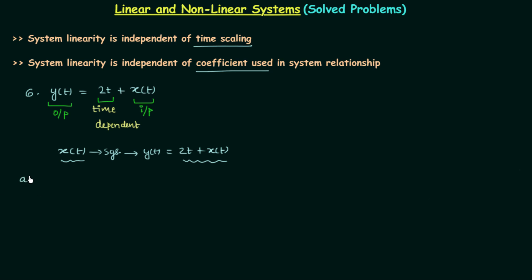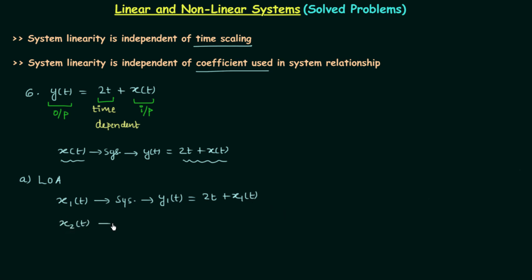Now we will check the law of additivity. I will take one input x1(t); for this input the system produces output y1(t) = 2t + x1(t). Similarly, for input x2(t), the output y2(t) = 2t + x2(t). Adding these: y1(t) + y2(t) = 4t + x1(t) + x2(t), since 2t + 2t = 4t.